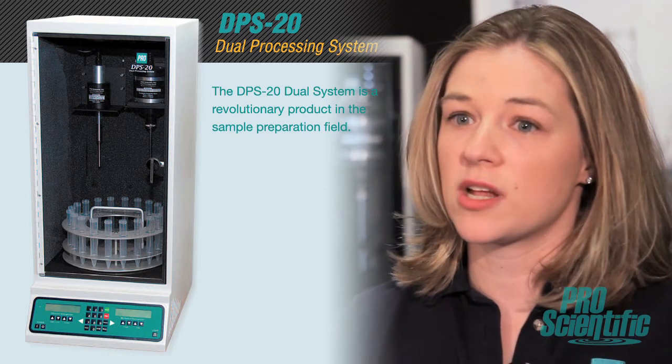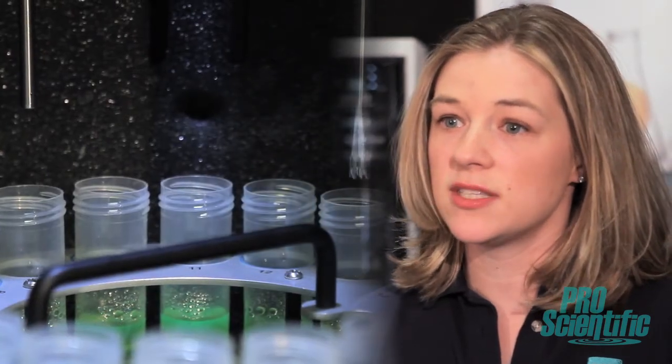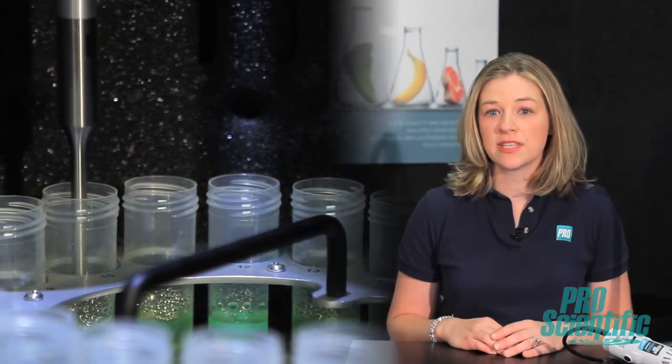In response to this multiple sample homogenizing problem, ProScientific created the DPS20 automated homogenizing system which allows for repeat processing and consistent results. It also simplifies sample prep by combining mechanical homogenizing and sonication in a compact unit that can free up a large amount of your valuable lab time.